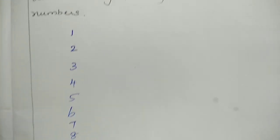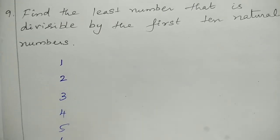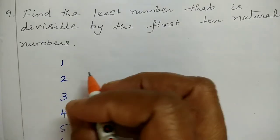Natural numbers, first 10 natural numbers: 1, 2, 3, 4, 5, 6, 7, 8, 9, and 10.